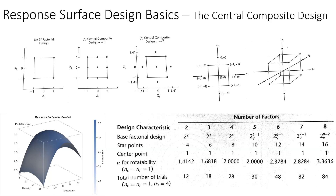The basic design behind response surface methodology is the central composite design. In a two-to-the-k factorial design, we have k factors each at two levels. With only two levels — a low level and a high level for each factor — we can only fit a straight line and cannot test whether there is any curvature effect.